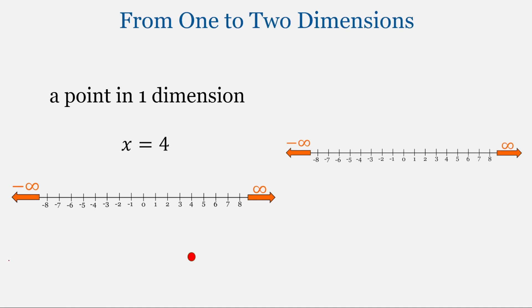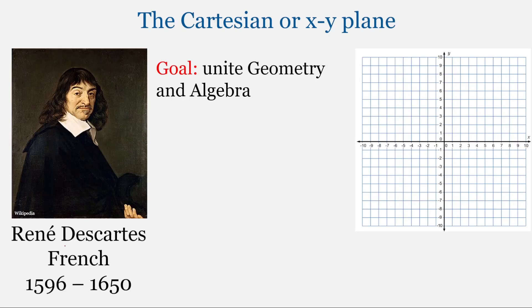We're going to start with one number line and then take another number line and rotate it 90 degrees, creating the Cartesian plane, or what's sometimes called the xy plane. The Cartesian plane is named after Rene Descartes, a French philosopher and mathematician.